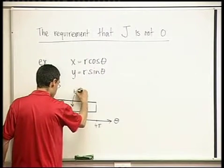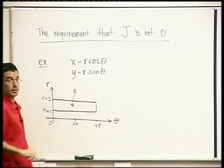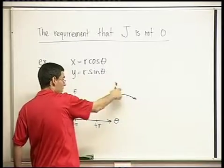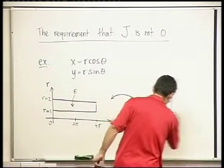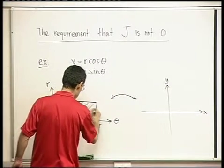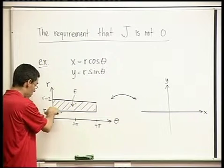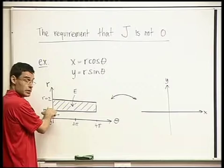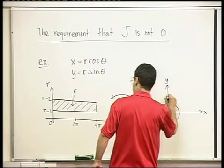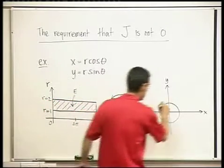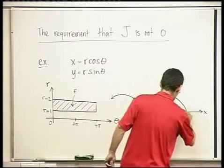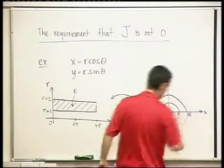This is E, a domain in the r-theta plane. What would it correspond to under this mapping in the xy plane? All the points have r between 1 and 2, so it's going to be a ring between two circles — one of radius 1 and the other of radius root 2.